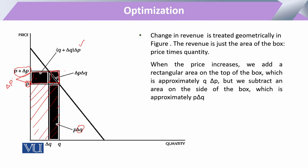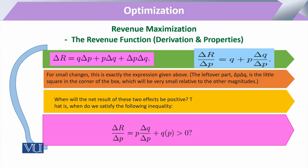We can see that if the change in price is very, very small — approaching zero — then this small area, which is the product of the two changes ΔP × ΔQ, becomes very nominal in size. So when we derive our revenue function, this term is present but is very small.